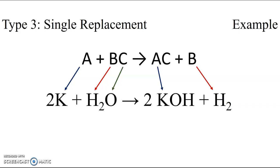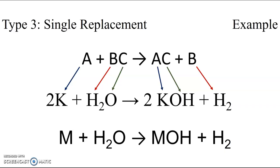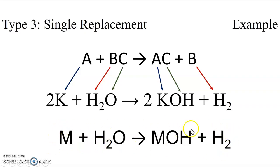We do see hydrogen as the singleton element on the product side, but it is still kind of part of the compound, so this can be a little tricky for students to identify as a single replacement reaction. To help with that, there is a more specific generic reaction provided in your reference tables under the single replacement heading, showing a metal reacting with water to produce the hydroxide compound of that metal and hydrogen gas.